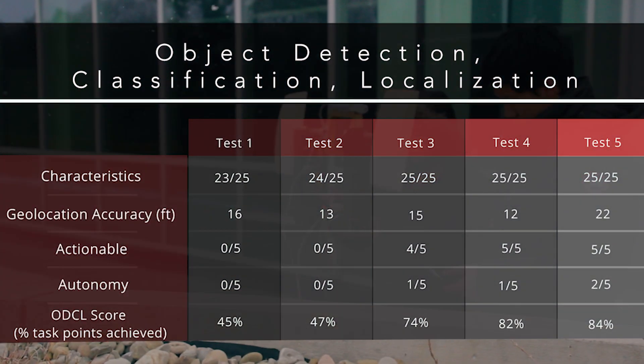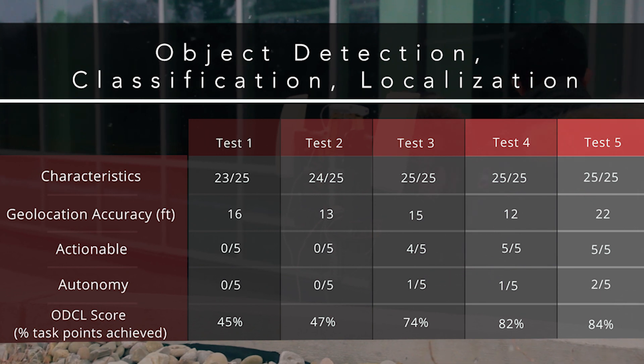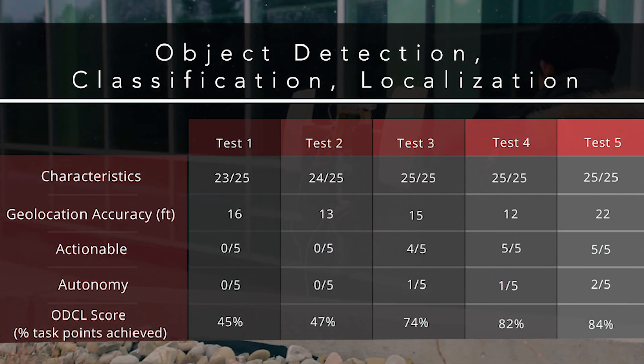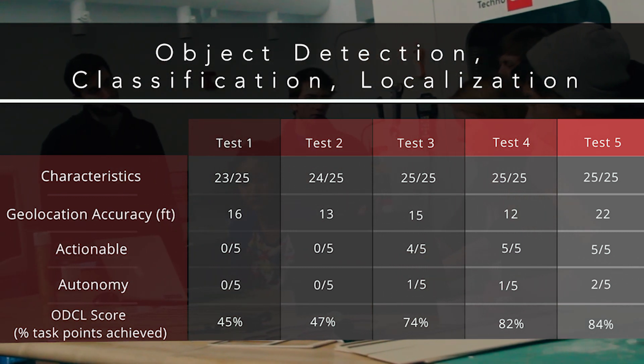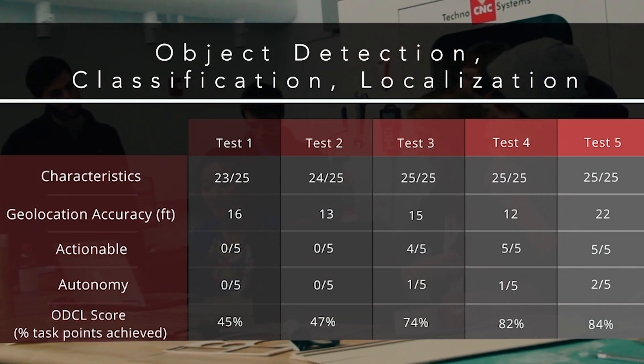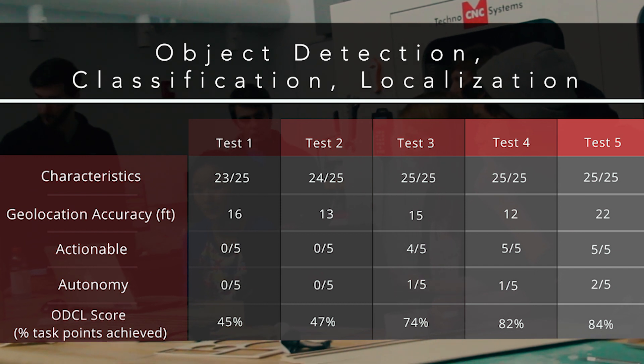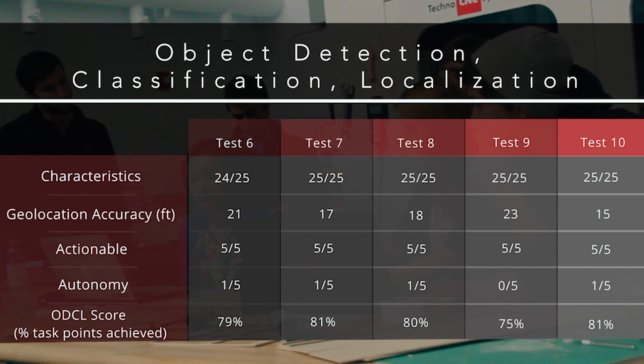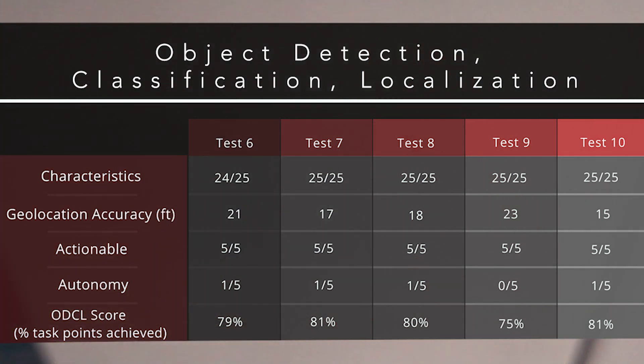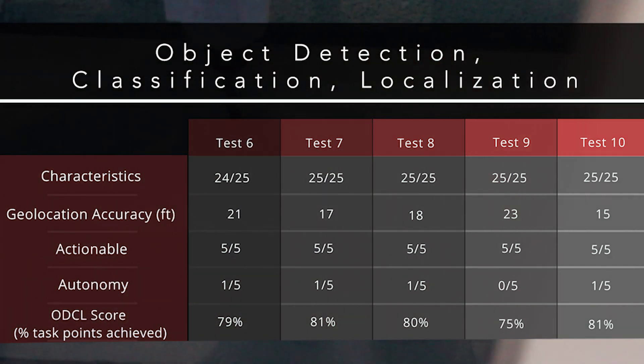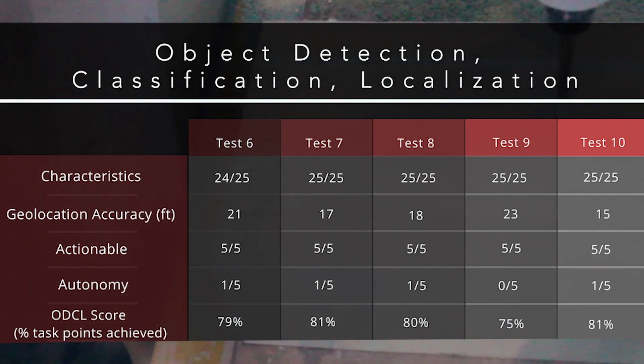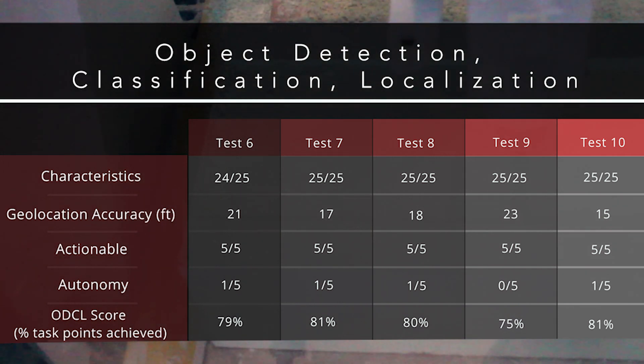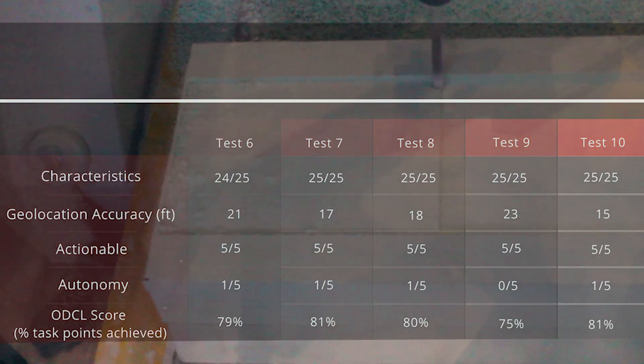CU Air tested against five standard objects in each flight. On average, the team achieved 73% of object detection, classification, and localization task points. The team recognized nearly all of the characteristics, occasionally missing shape or color. On average, the team achieved 98% of characteristic points, and the team was able to geolocate objects, on average, within 17 feet. The team averaged 80% of points for actionable intelligence and 15% of points for autonomy. CU Air expects similar performance in competition, with the exception of actionable intelligence, which the team expects to achieve full points due to improved training.